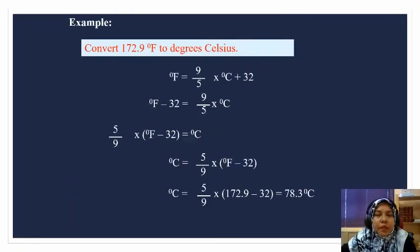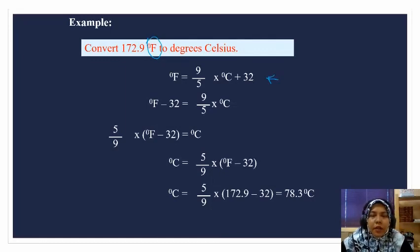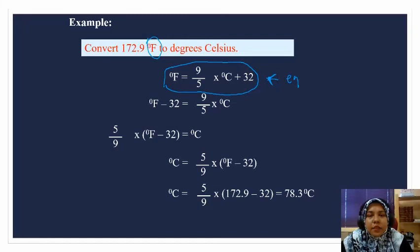Now let's try an example. Convert 172.9 degree Fahrenheit to degree Celsius. You have degree Fahrenheit to degree Celsius. This is the equation that needs to be memorized when we convert this unit. Degree Fahrenheit equals nine over five times degree Celsius plus 32. Now you have degree Fahrenheit, so you need to find degree Celsius.